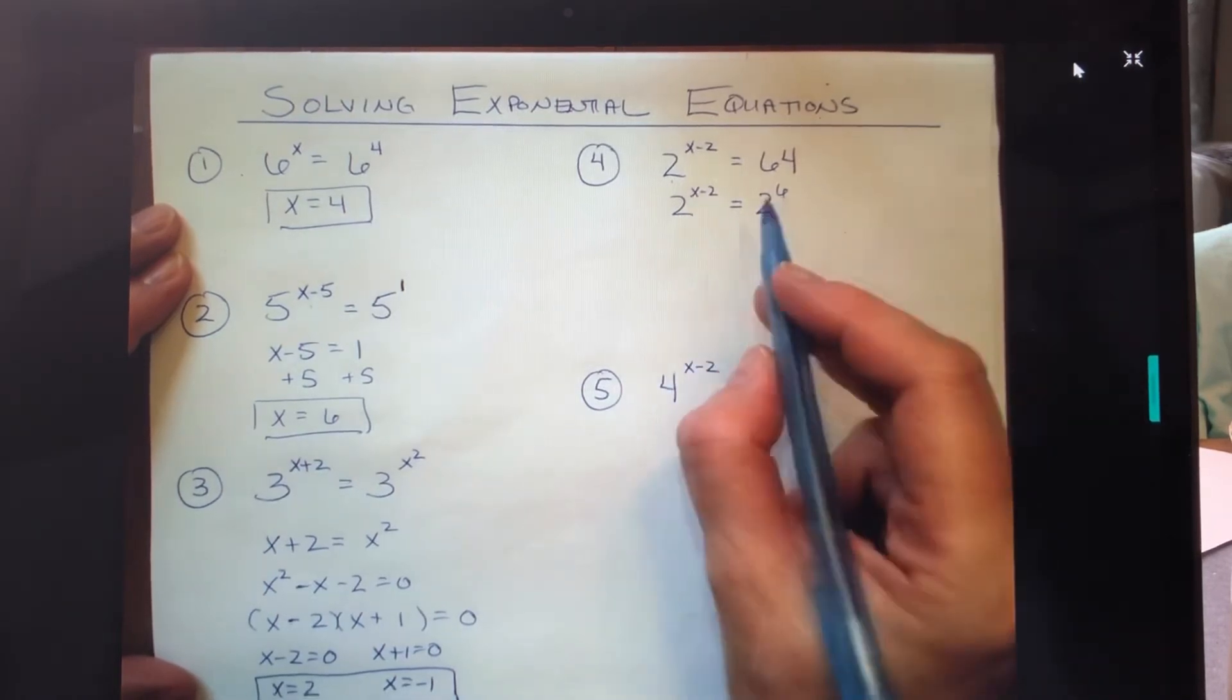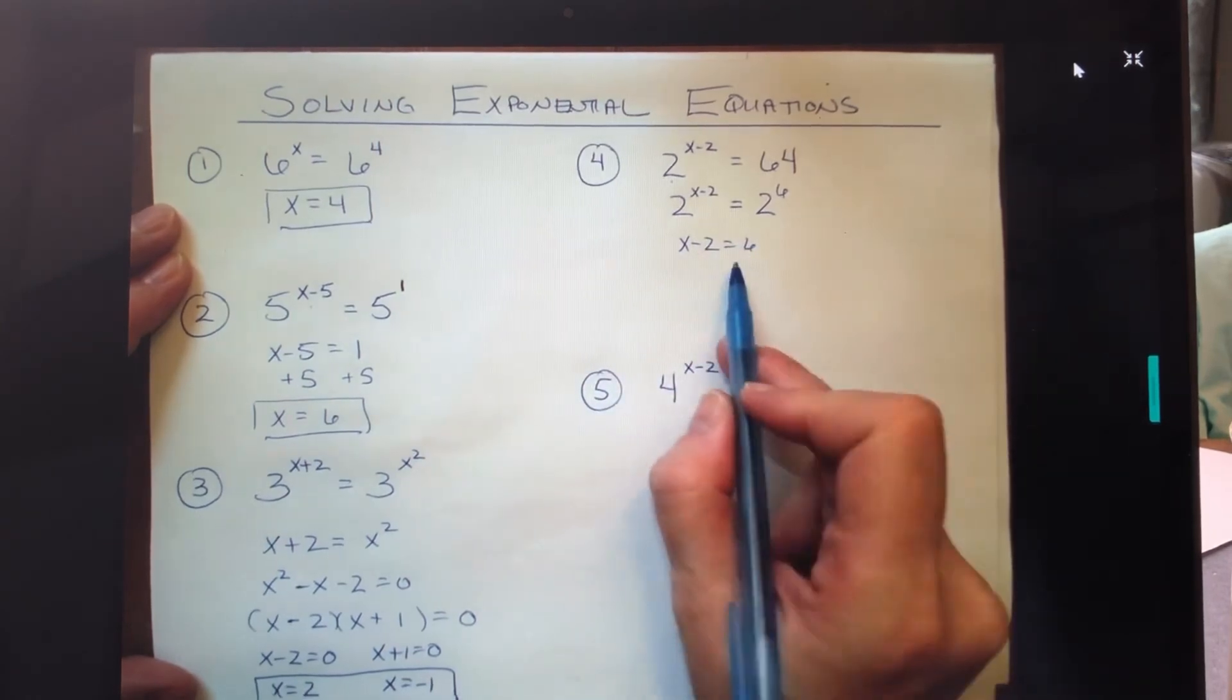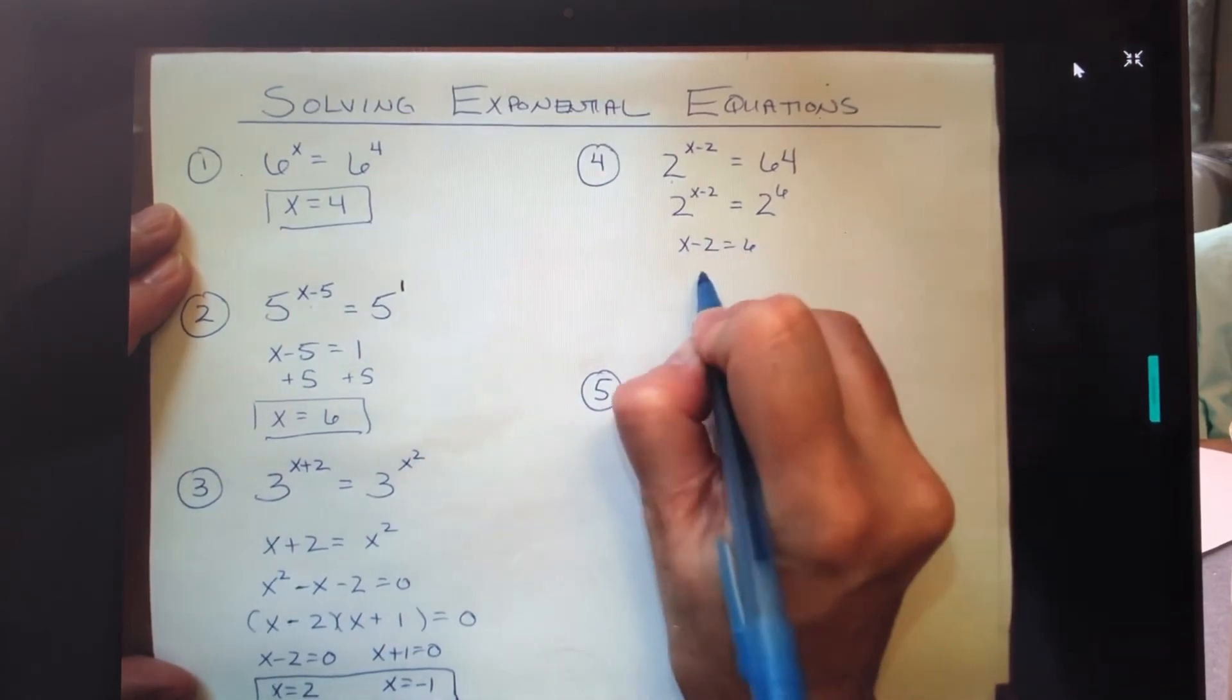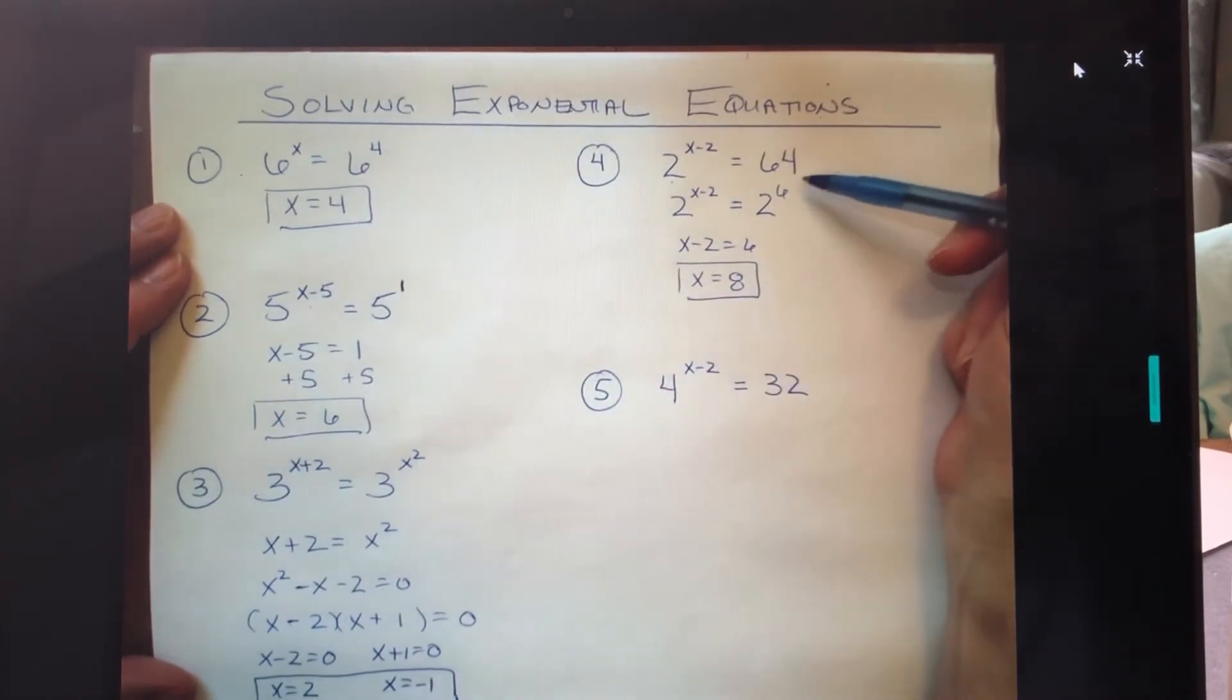Because now I can take those exponents, pull them out, set them equal to each other, and very quickly algebraically solve this by adding 2 to both sides. So I get x equals 8.